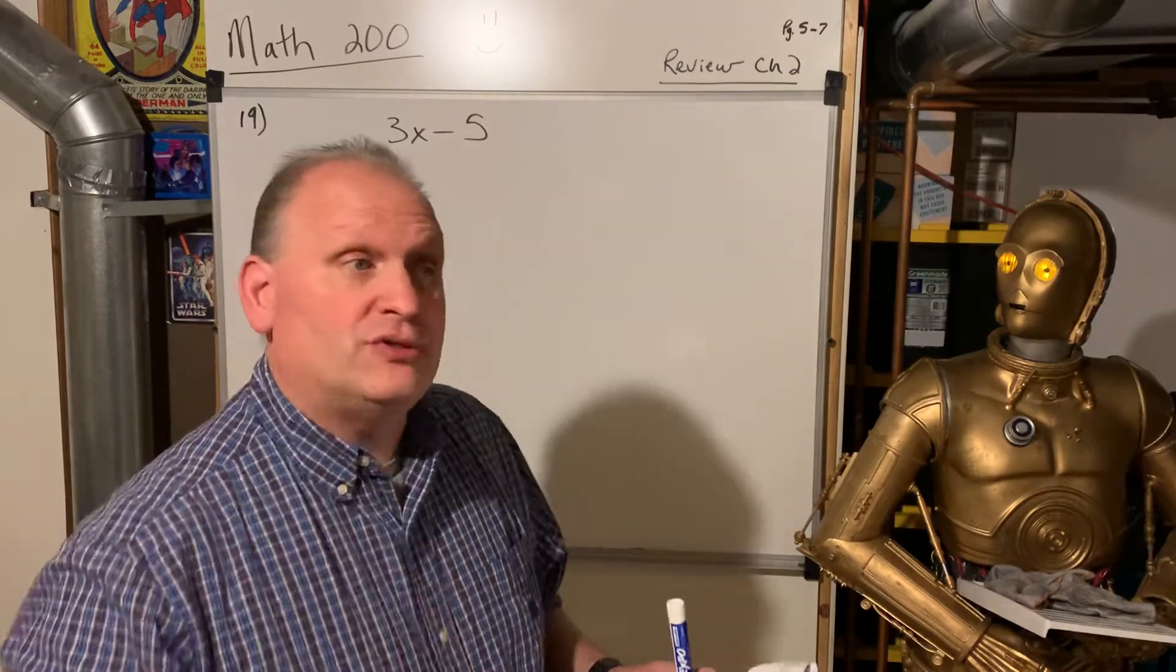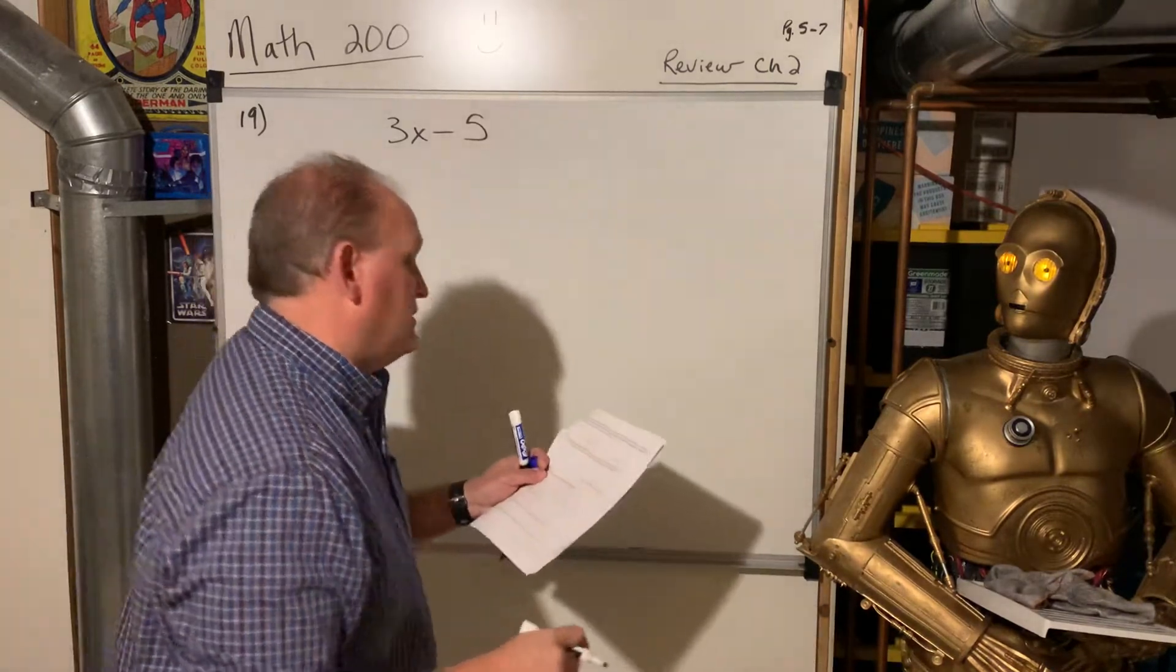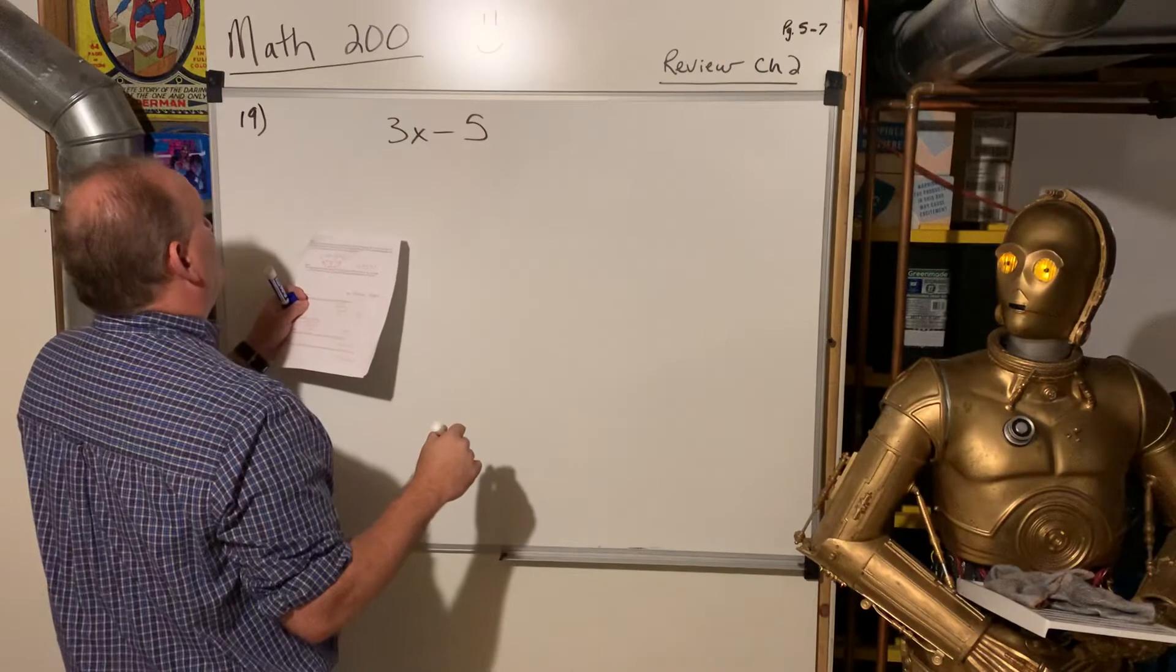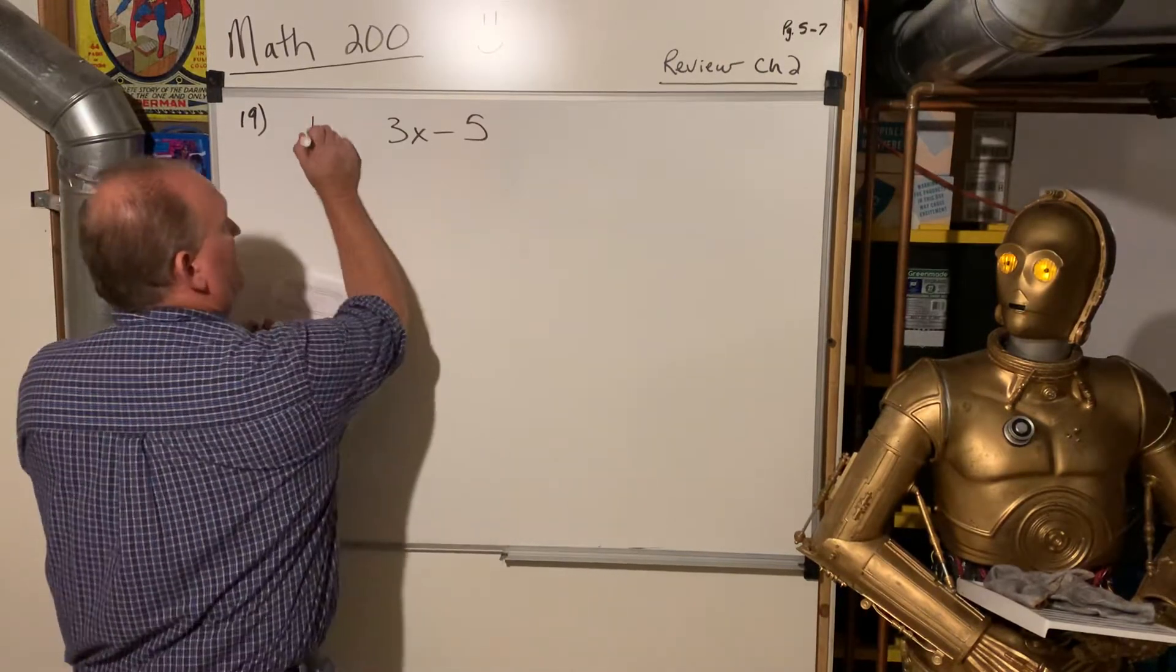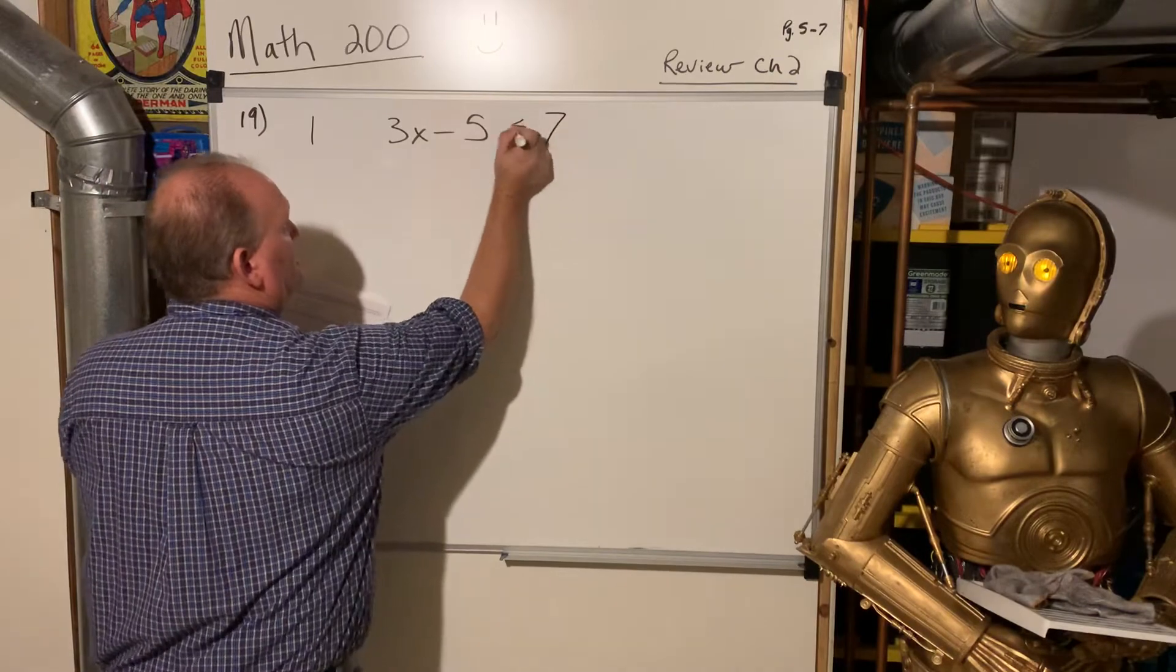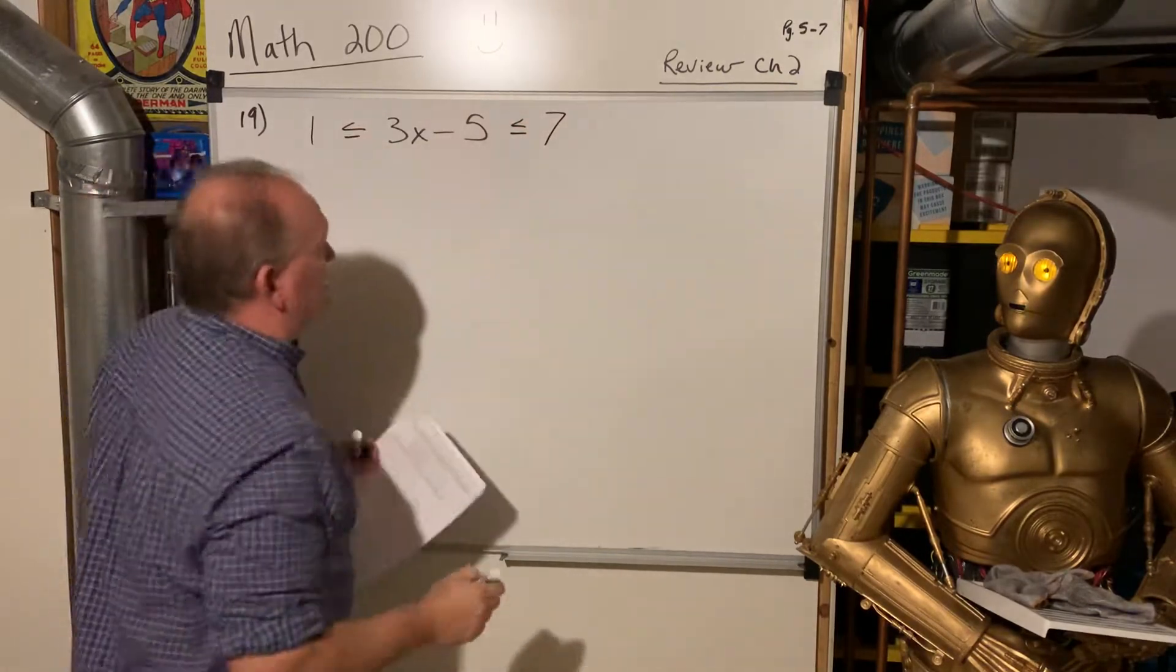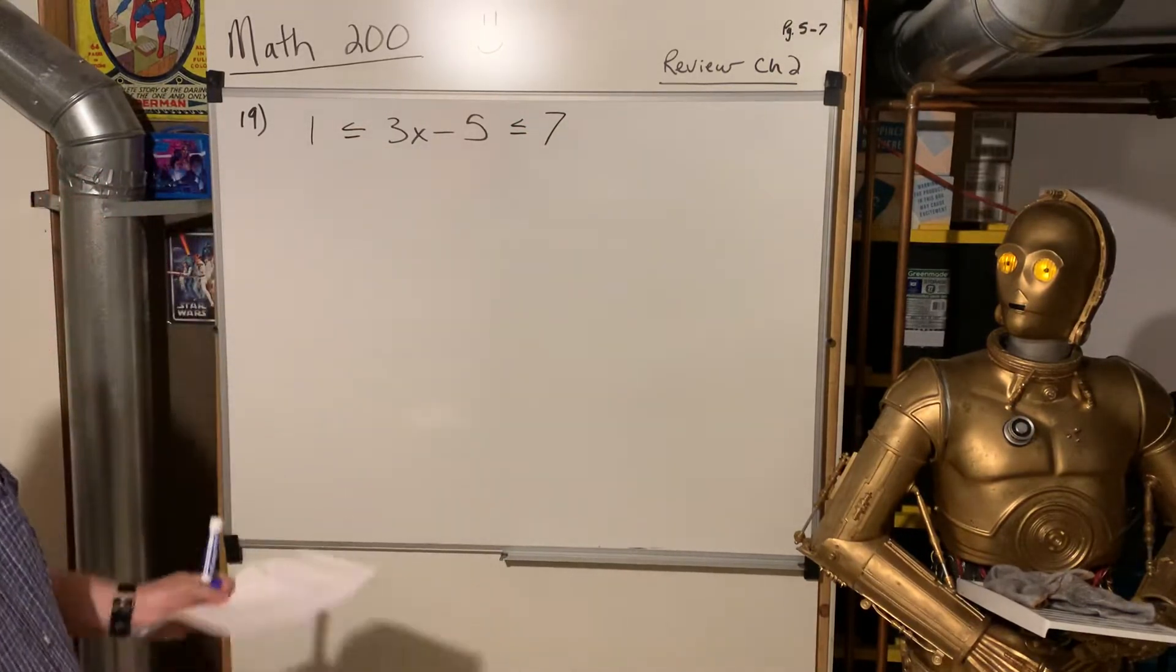Addition, multiplication, those are commutative. So that one, it doesn't matter which one is first or second. Between 1 and 7, inclusive. So inclusive means that includes that number. So there we are. Compound inequality.